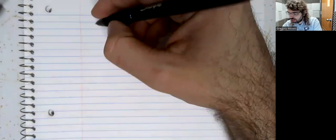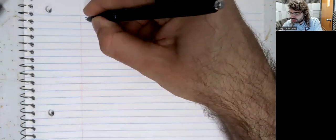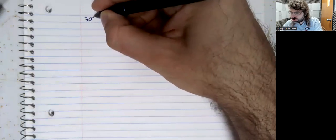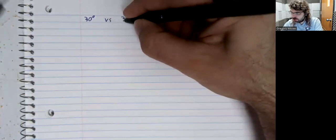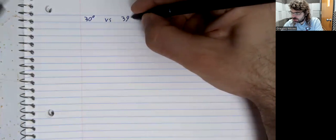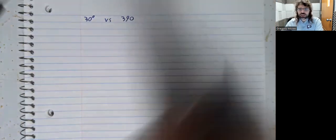In this video, we're going to talk about co-terminal angles. Angles have the property that you can have two different angles that look the same. Let's look at 30 degrees versus 390 degrees.